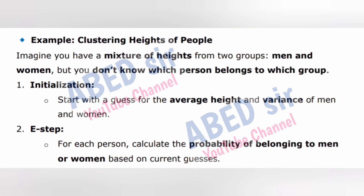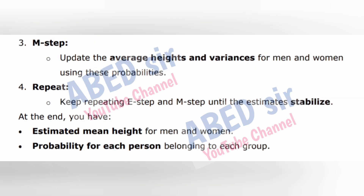Example: Clustering Heights of People. Imagine you have a mixture of heights from two groups — men and women — but you don't know which person belongs to which group. Step 1: Initialization — start with a guess for the average height and variance of men and women. Step 2: E-step — for each person, calculate the probability of belonging to men or women based on current guesses. Step 3: M-step — update the average heights and variances using these probabilities. Step 4: Repeat E-step and M-step until the estimates stabilize. At the end, you have estimated mean height for men and women, and the probability for each person belonging to each group.